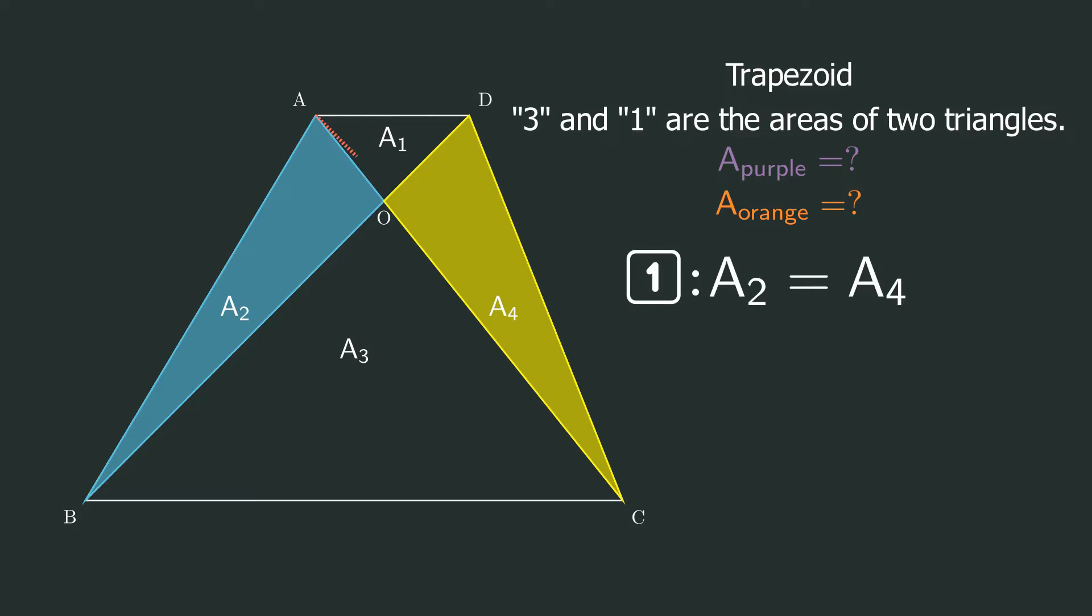Let's continue. Passing through the vertex, I'll create a perpendicular line on one of the diagonals. Let's call it h1. The area of O1 is derived like this. Express the area of A2 in the same way.